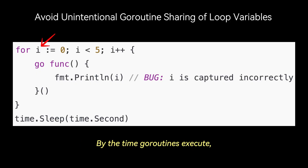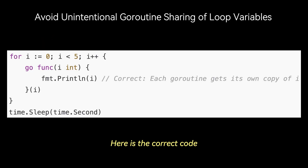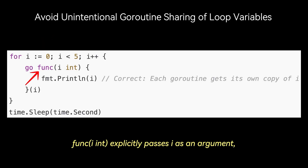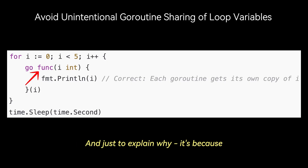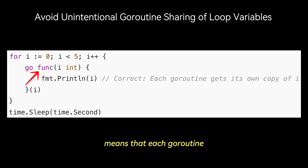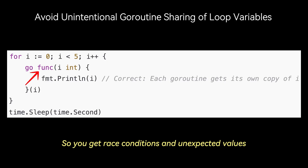By the time goroutines execute, i may have changed, leading to unexpected values. Here is the correct code: func(i int) explicitly passes i as an argument, avoiding variable capture issues and guaranteeing each goroutine prints the correct value of i. Explicitly passing i as a function argument means each goroutine gets its own independent copy of i at the time of its creation, preventing race conditions and unexpected values.